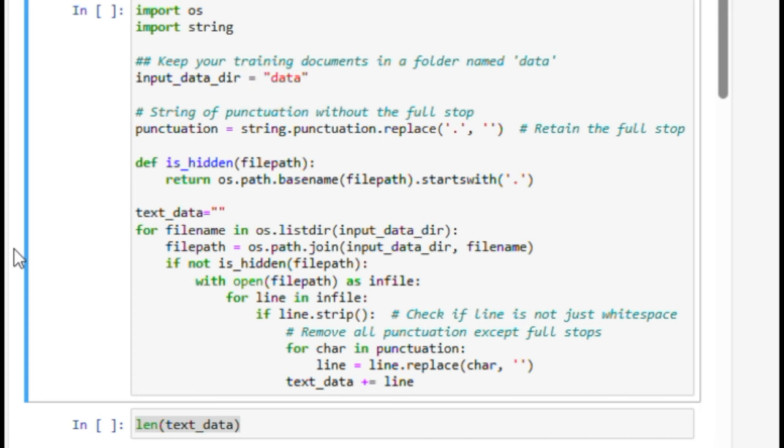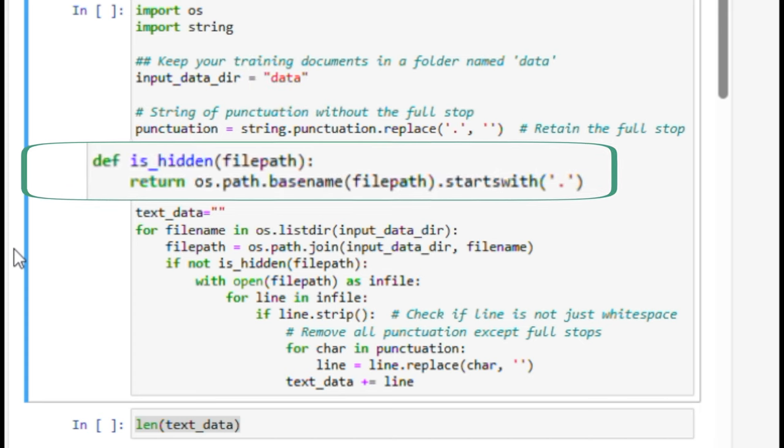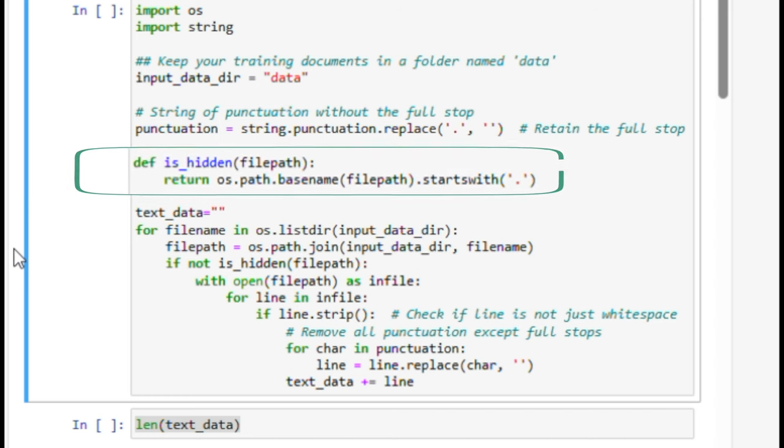We define a function named is_hidden to skip hidden files as it causes some trouble with GitHub or other hidden SVN files. Also, handling the hidden files is particularly useful when working in Unix-like environments where files starting with a dot are hidden.